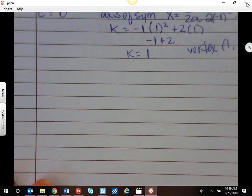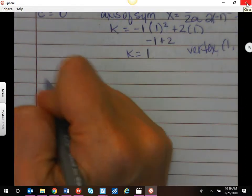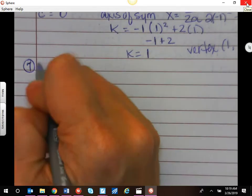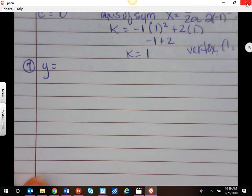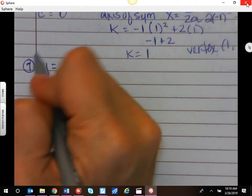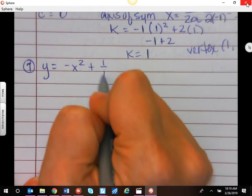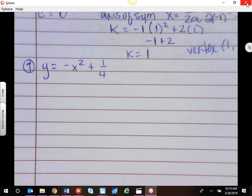There is number 7, this is on page 464. So number 7, the original equation was y equals negative x squared plus 1 fourth, so now we have a fraction, don't freak out.